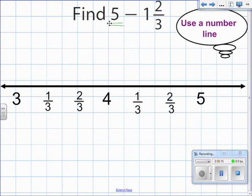1 and 2 thirds is going to be subtracted from 5, so my number line is going to end at 5 because we are subtracting. Remember that a mixed number in essence is 1 plus 2 thirds in this case.